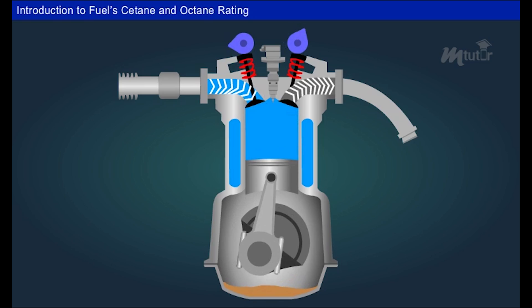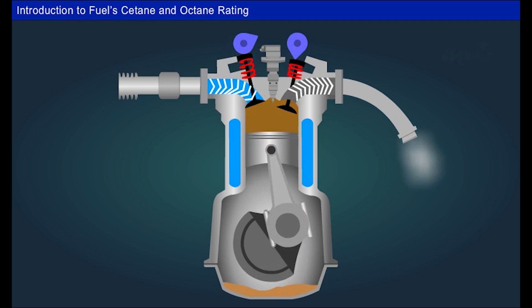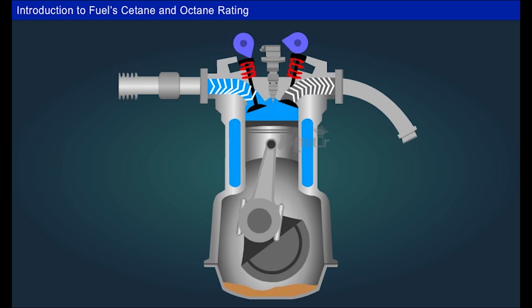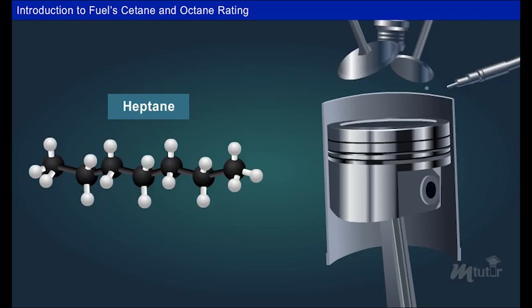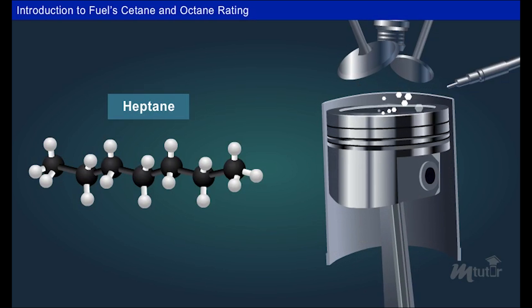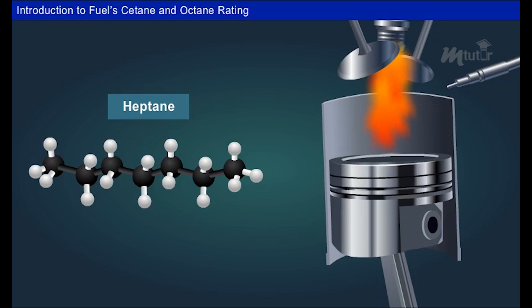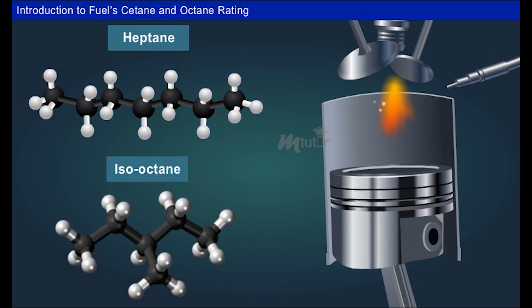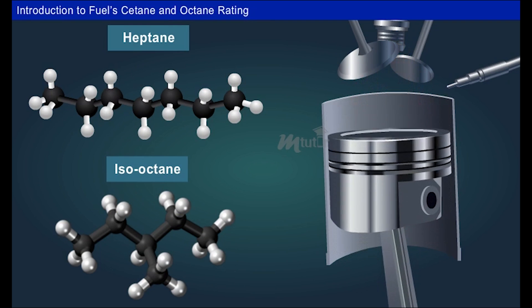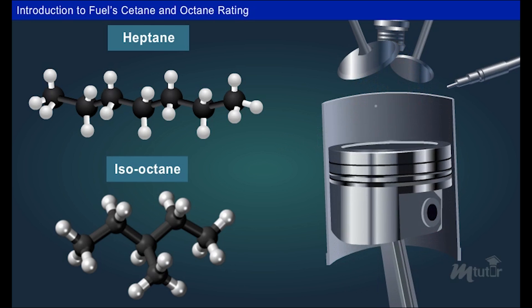The octane rating is a measure of a fuel's ability to avoid knock. Knock occurs when fuel is prematurely ignited in the engine cylinder, which degrades efficiency and can be damaging to the engine. Scientists discovered that some fuels knocked more readily than others. Experimental studies determined that pure normal heptane produced the most extreme knock, while pure isooctane produced the least knock, leading to the development of the octane scale. Similarly, a cetane scale was developed for diesel fuels.